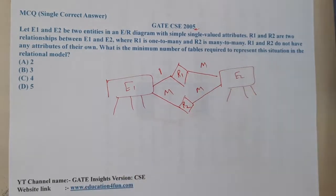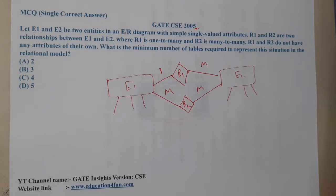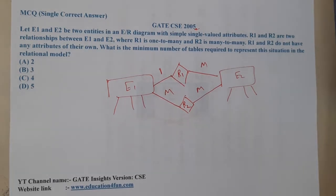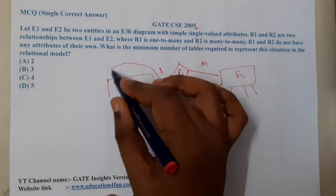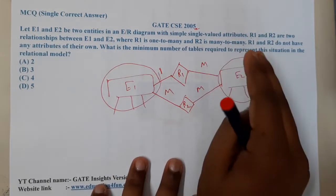So what is the minimum number of tables required to represent the situation? Now here they are asking how many tables do we need. To be clear, this is one table and this is one table. So a minimum of two tables are mandatory.